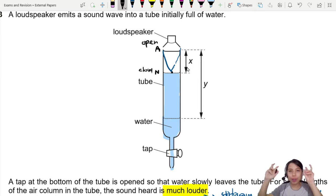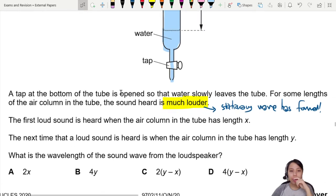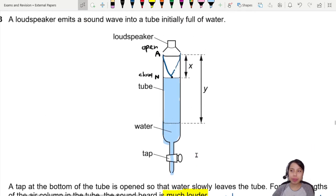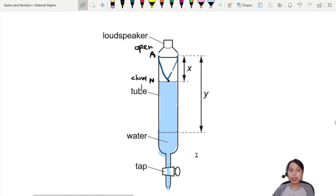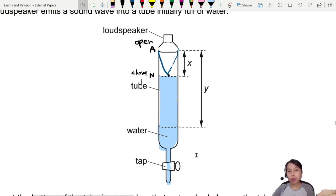Then the next time a loud sound is heard is when the air column in the tube has length y. What is the wavelength of sound from the speaker? Let's go back to the diagram. At one point your water level will drop until here, then another loud sound is heard.